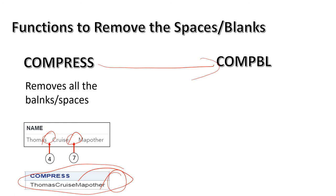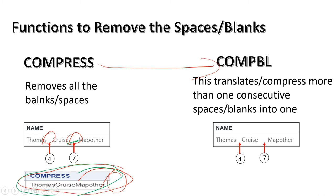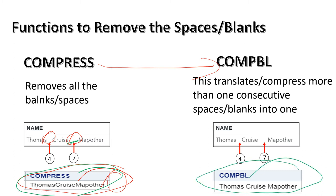Now let's understand compbl. Its definition says it translates or compresses more than one consecutive space into one. So if there are seven blank spaces between two strings, compress removes all of them entirely, while compbl reduces multiple spaces to a single space.